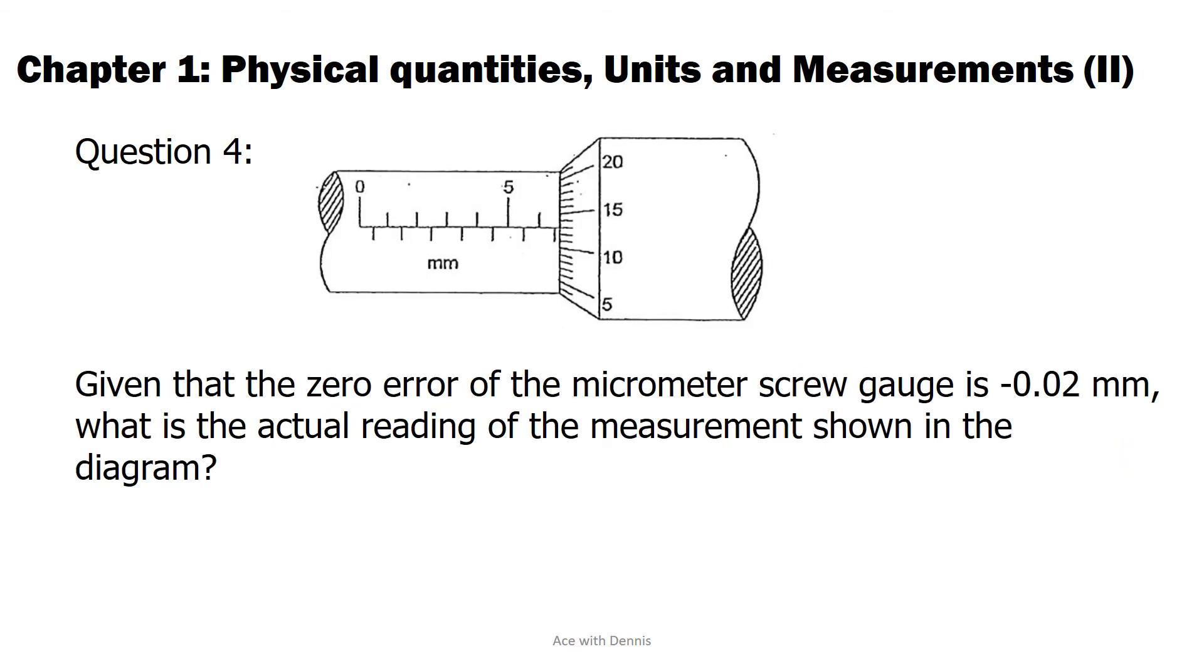Question 4. Given that the zero error of the micrometer screw gauge is minus 0.02 millimeters, what is the actual reading of the measurement shown in the diagram? A. 6.63 millimeters. B. 6.65 millimeters. C. 6.61 millimeters. D. 6.05 millimeters.